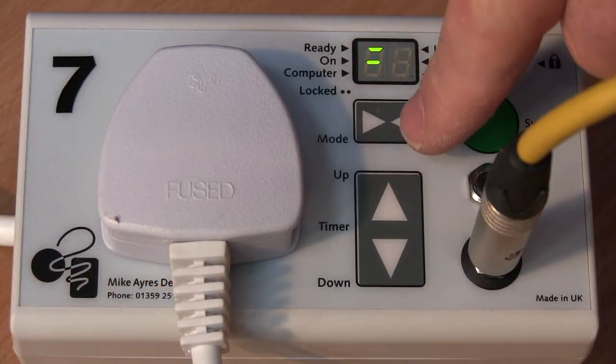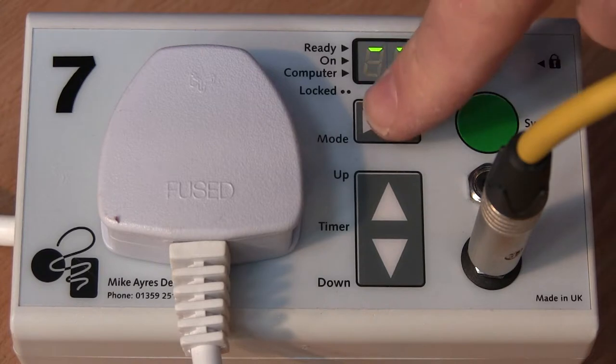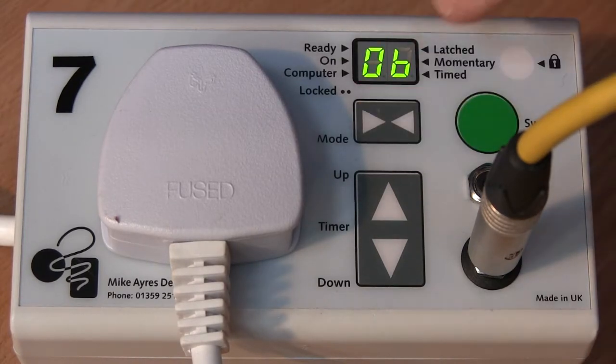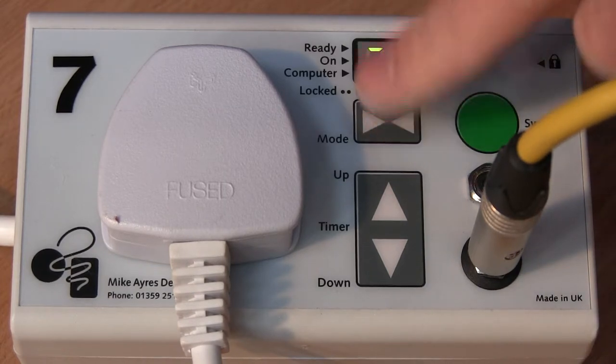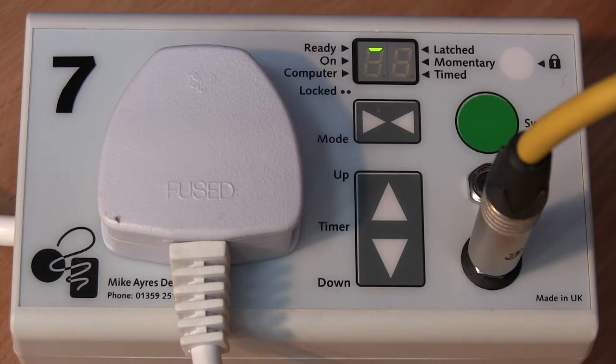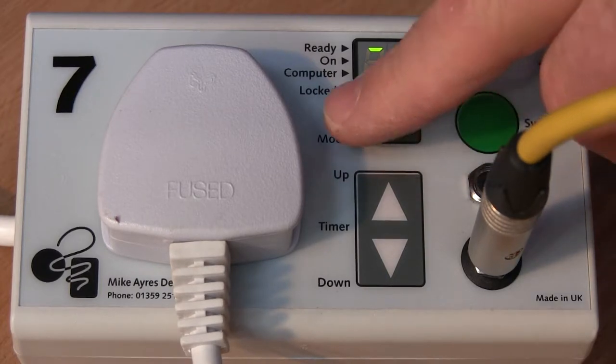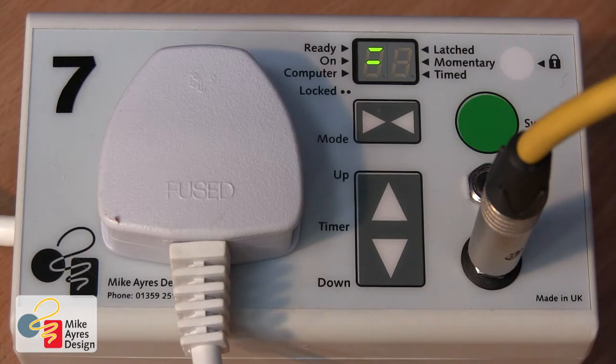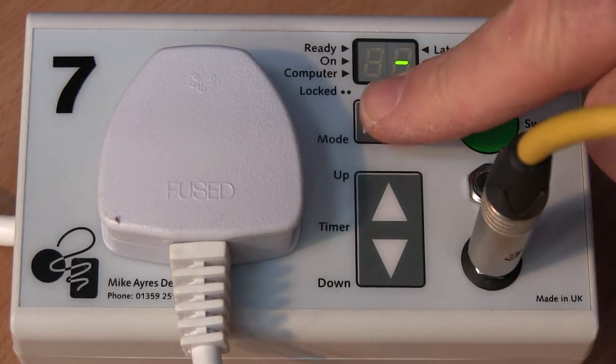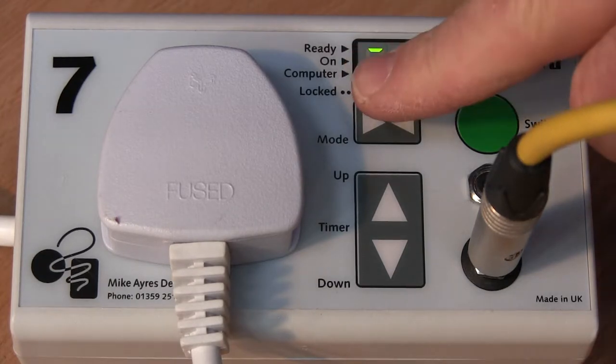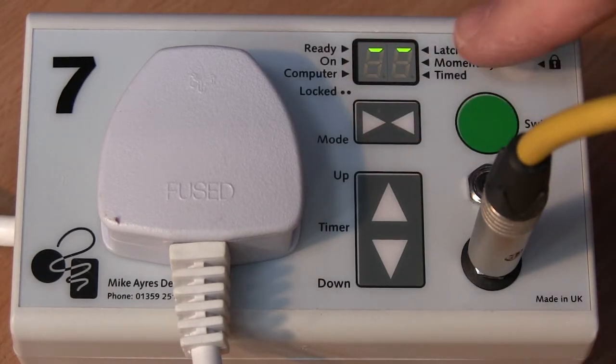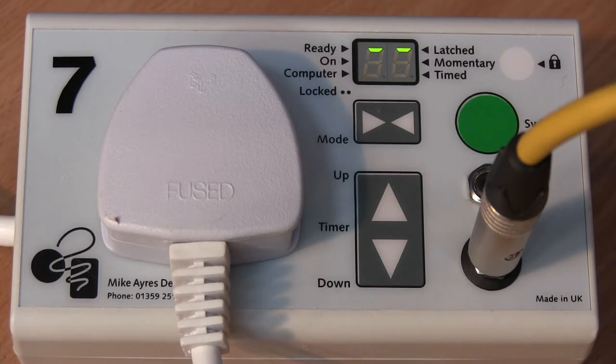Right, let's get this working. What we need to do is touch the mode button which is right there. Now every time I touch it you will see the little LEDs here change to something different. There you can see a little bar at the very top, it's next to ready. Press it again, and it says on. Press it again, it goes to latched, and again momentary, and timed. Try this one yourself. Now I want you to touch the mode button until it goes to the latched mode and we're ready to look at our first switch operation.